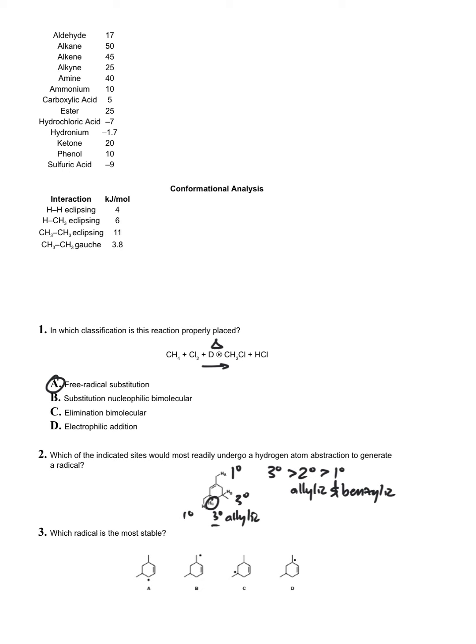Question three: which radical is the most stable? This is just the flip side of question two, we're actually shown the radical. Let's categorize them and then we'll evaluate. A is secondary allylic, B is primary, C is tertiary, and D is tertiary allylic. So D is gonna win, tertiary and allylic.